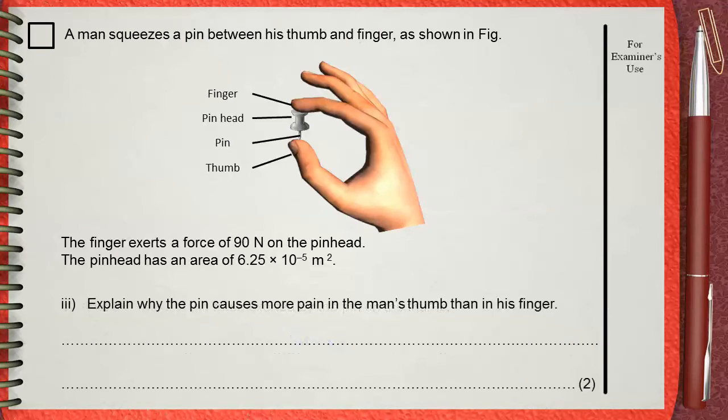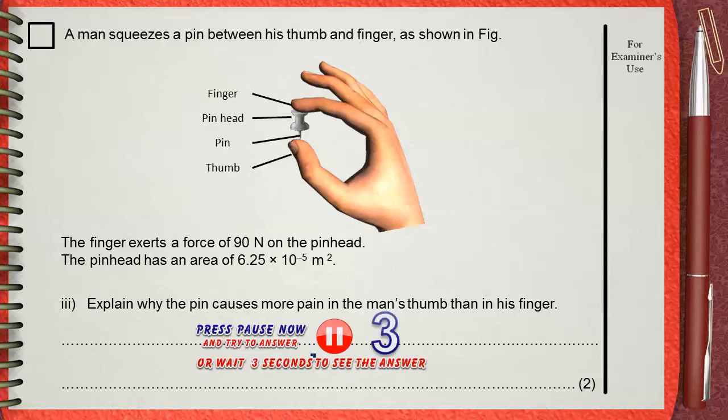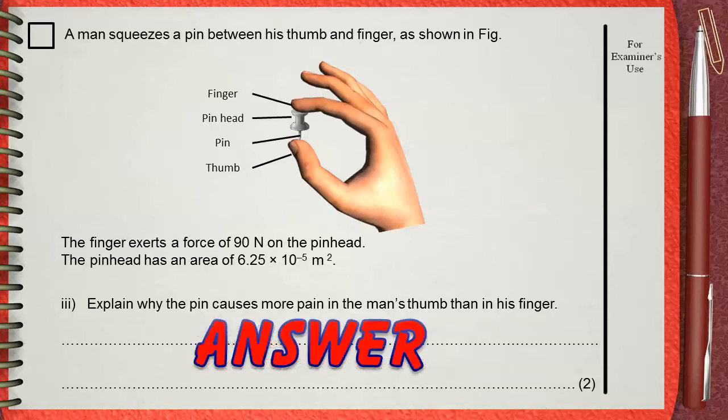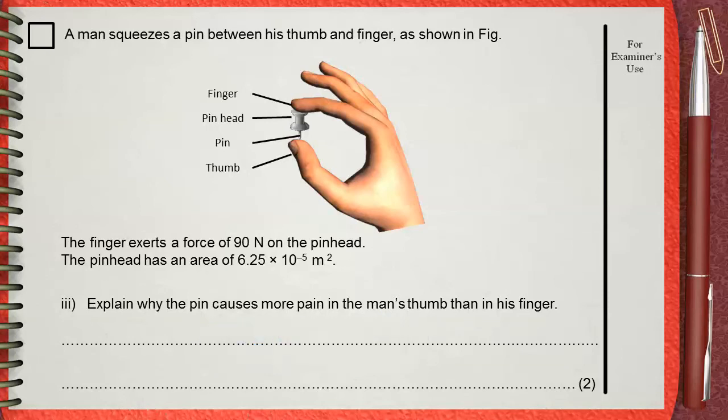Part iii: Explain why the pin causes more pain in the man's thumb than in his finger. As we said in the previous question, the force is the same - the finger applies 90 newtons on the pinhead, and the pin applies the same 90 newtons on the thumb. But even though the force is the same, the thumb feels more pain.